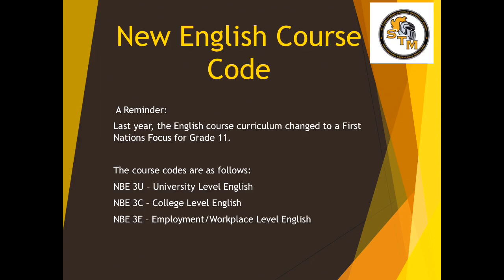As a reminder, last year the English course curriculum changed to a First Nations focus for grade 11s. From English 2D, you can move into NBE3U, which is university level. If you took English 2P, you will choose NBE3C, which is college level. And if you were in ENG2L, you will choose NBE3E, which is employment or workplace level. I can't stress enough how important it is to get into the habit of checking the prerequisites of the courses you're choosing.